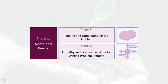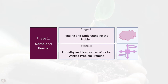Some background research is then conducted to truly understand the problem and the types of solutions attempted by others in the past. Groups then gather information about the problem through human-centered design methods such as interviews and observations. This is followed by a period of framing the problem as a wicked problem.